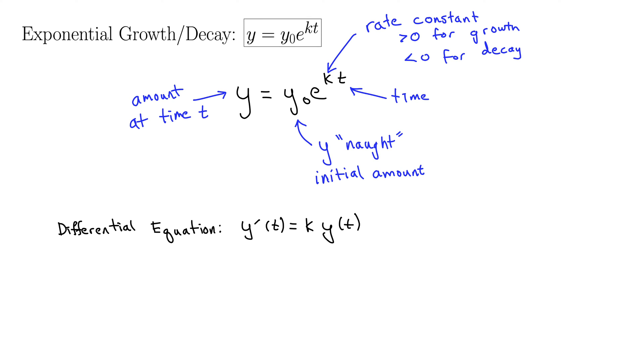So imagine k is greater than zero. Then y of t becomes bigger, then it changes even faster. It becomes bigger and bigger and bigger. But the bigger it gets, the faster it changes. The faster it changes, the bigger it gets. And you can see how this spirals out of control, which is exactly what exponential growth does. So this is the derivative version of exponential growth.